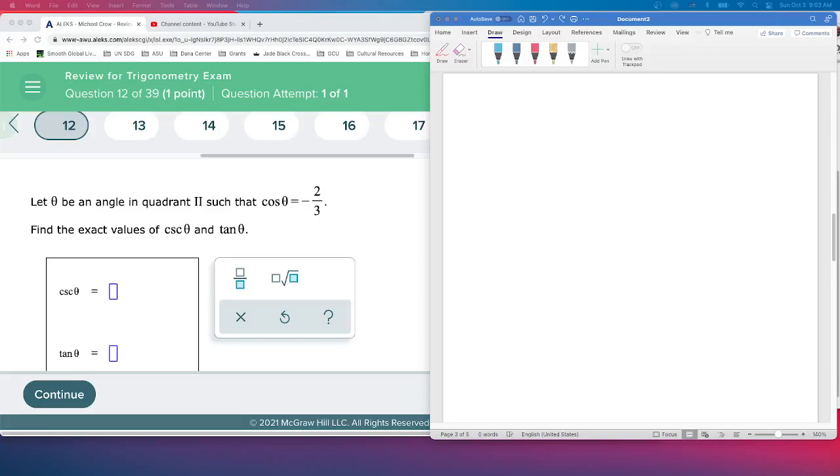Okay, question number 12. In this one we're given some information about theta, but we don't need to find theta. We're finding the function values: the cosecant of theta and the tangent of theta. The information we have is that we are in the second quadrant, and cosine theta is equal to negative two-thirds, which is good because cosine in the second quadrant needs to be negative. So we're over here in quadrant two.